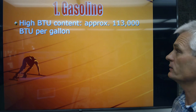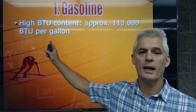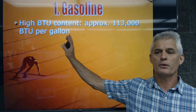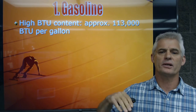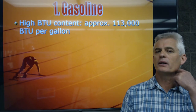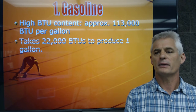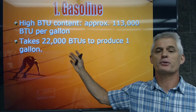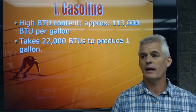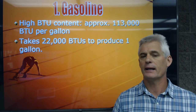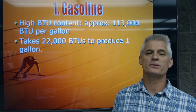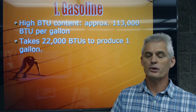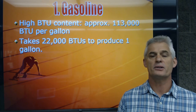Let's talk about gasoline. Gasoline has a really high BTU content, approximately 113,000 BTUs per gallon — that's its energy content at sea level, because as you go up there's less oxygen. It takes about 22,000 BTUs to produce a gallon of gasoline, so you have a significant net energy gain.